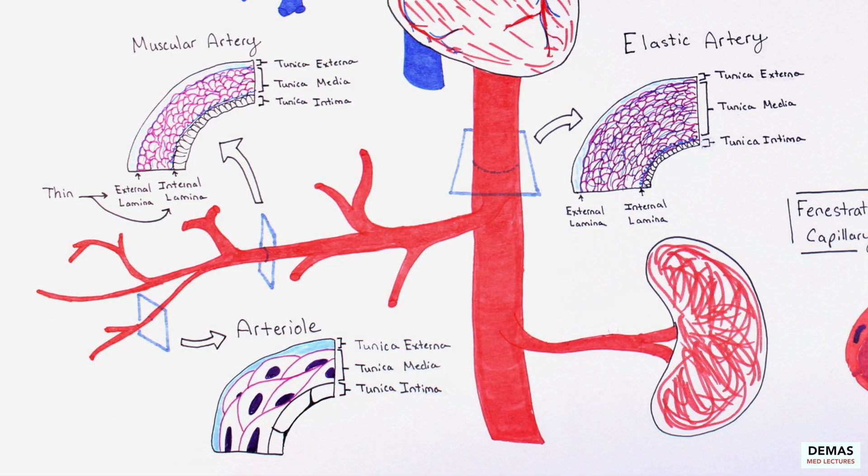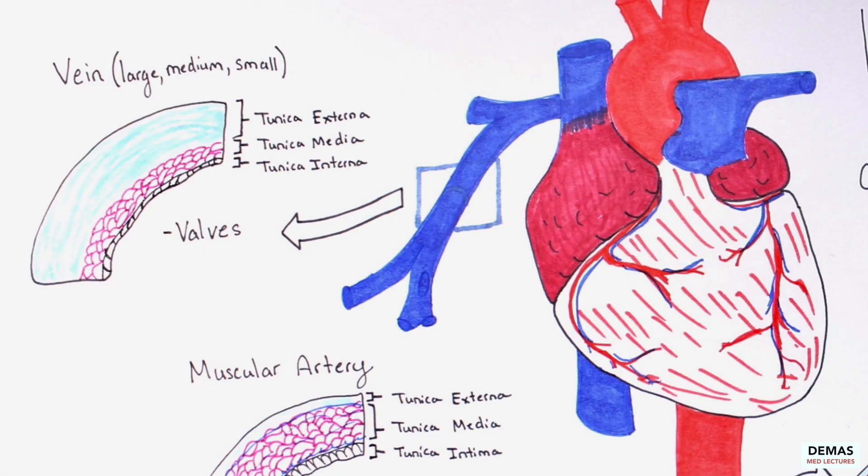Arteries typically have thicker tunica media than veins, and all of the arteries, with the exception of arterioles, have elastic fibers to provide greater strength and flexibility to these structures. Veins have periodic valves to encourage blood movement back to the heart.